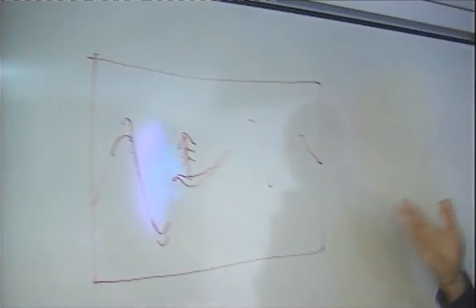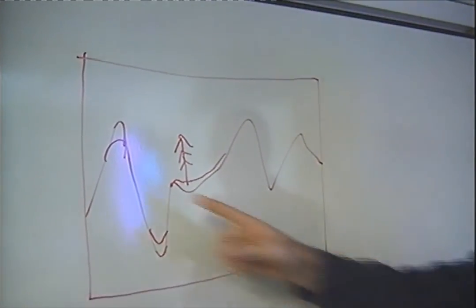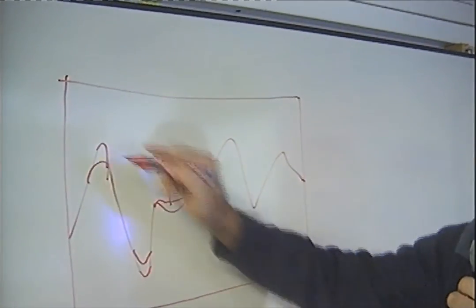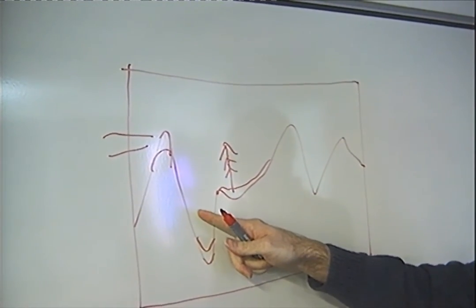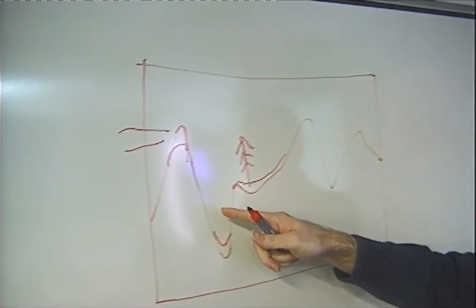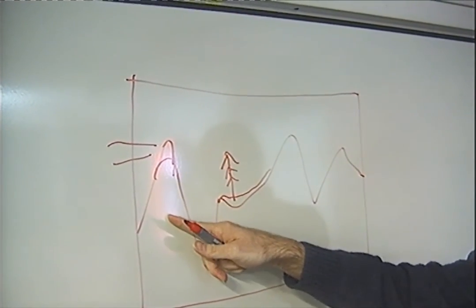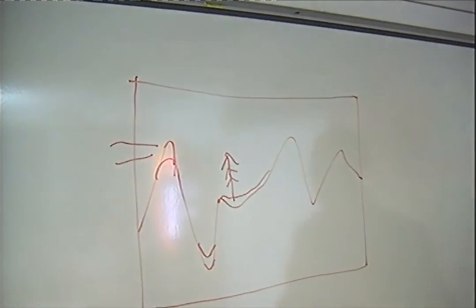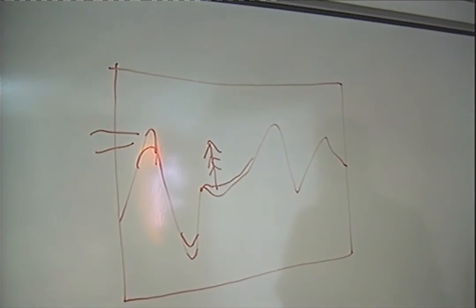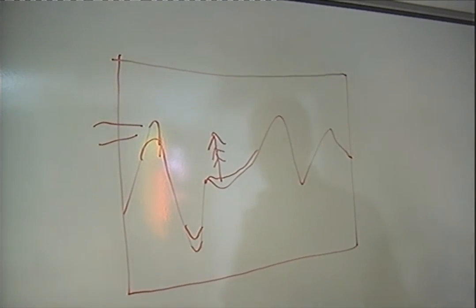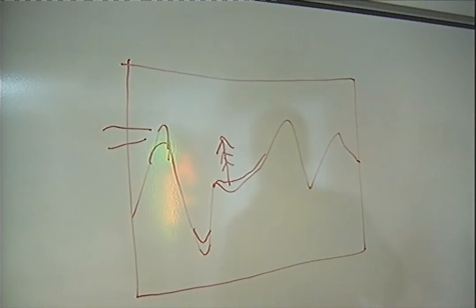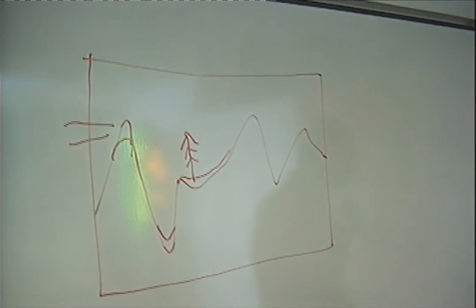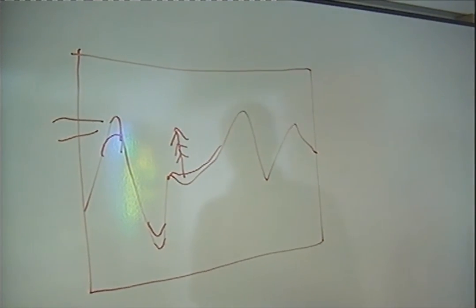The problem with this approach is that nature's generation is global. When there's a mountain here and wind blowing from one side, that area gets really dry and a desert forms. But to know there's a desert, we need to know there's a mountain and a wind source. We can't really use that for generating in a game, because we need to generate smaller chunks.